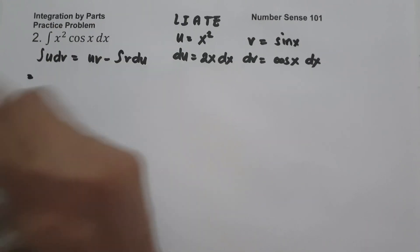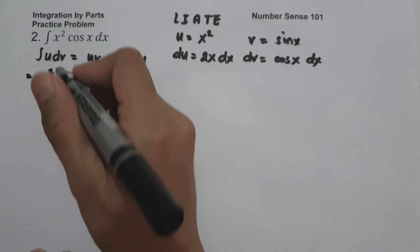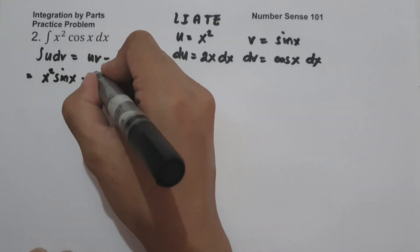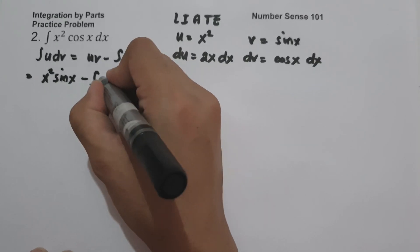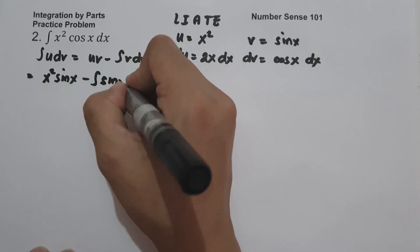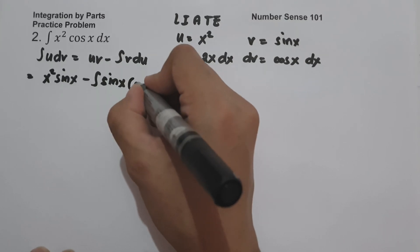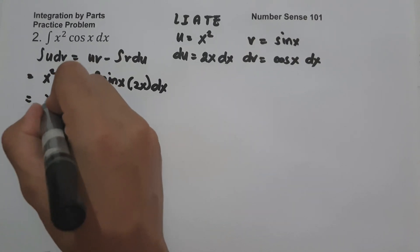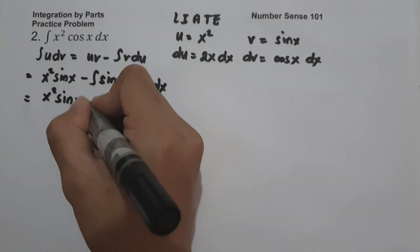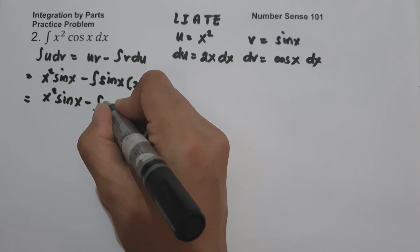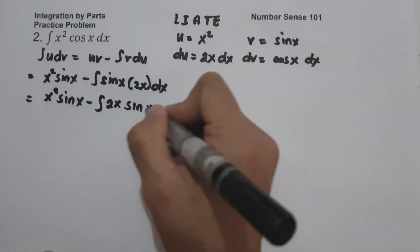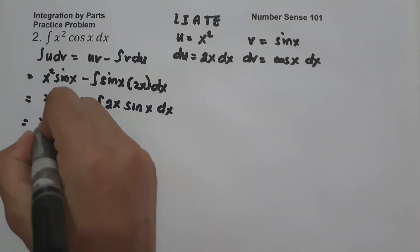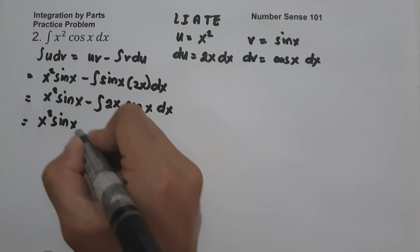Applying the integration by parts formula: u·v minus the antiderivative of v·du gives x²·sin(x) minus the antiderivative of sin(x)·2x dx. So we have x²·sin(x) minus the antiderivative of 2x·sin(x) dx.